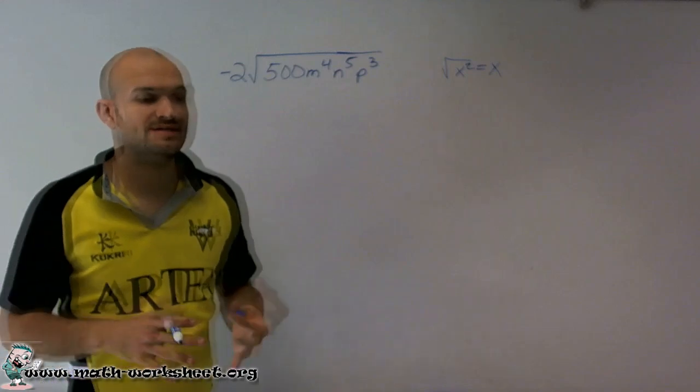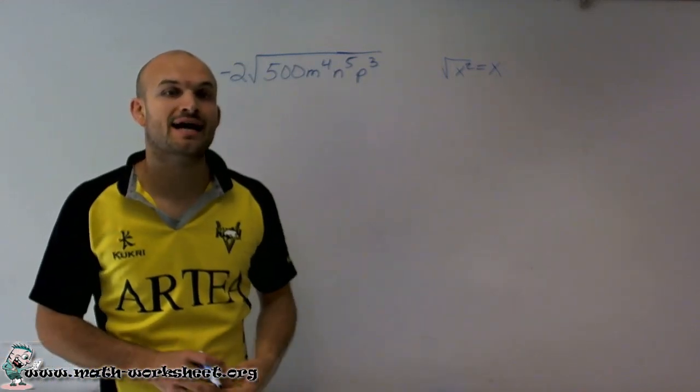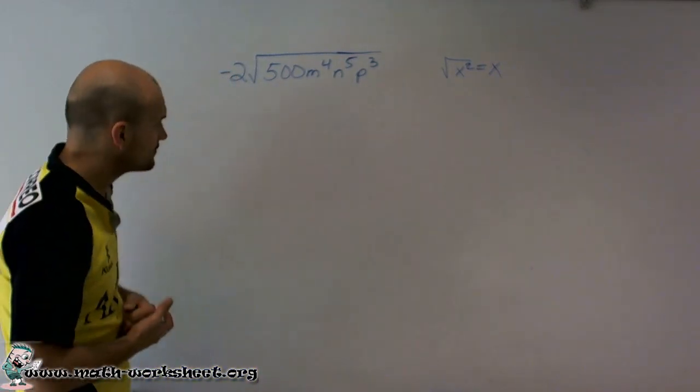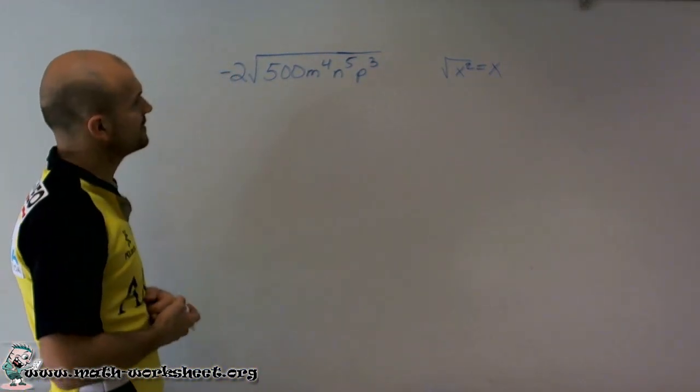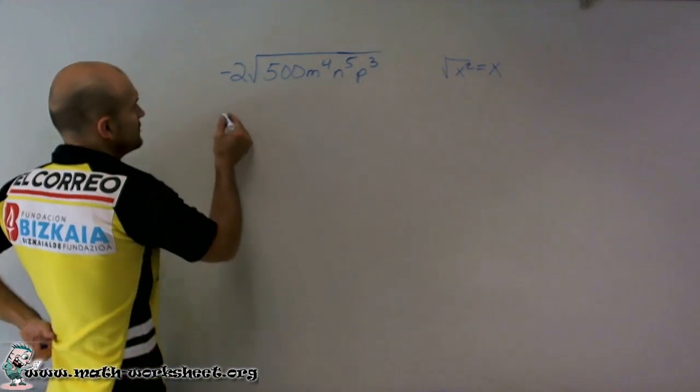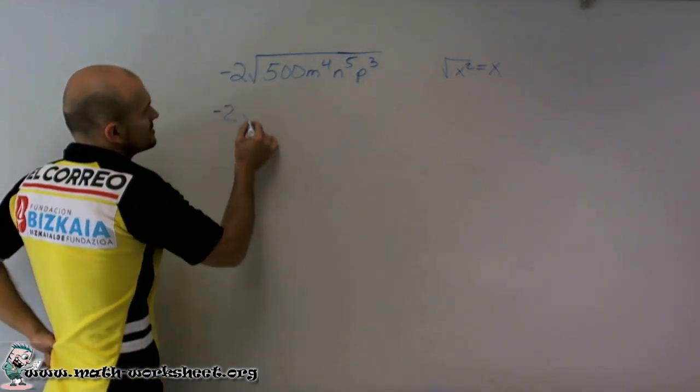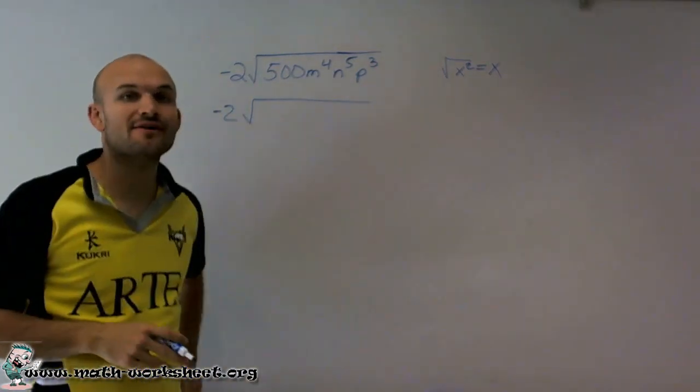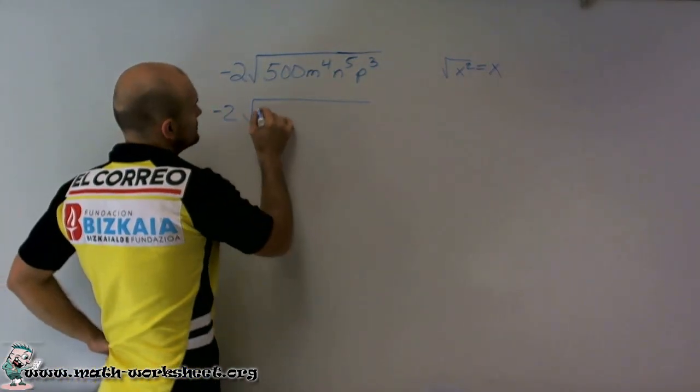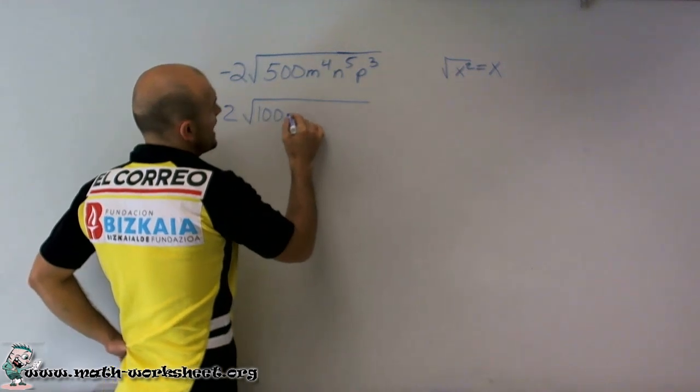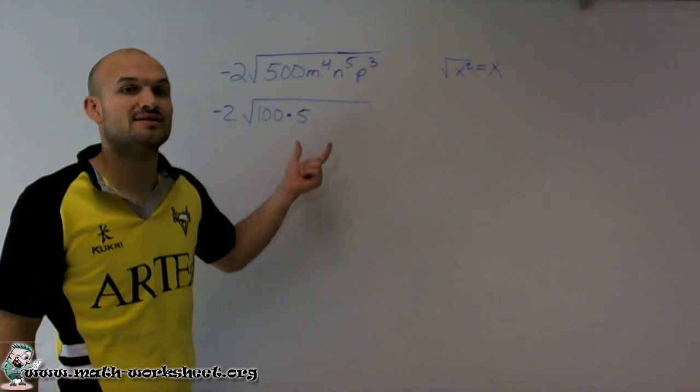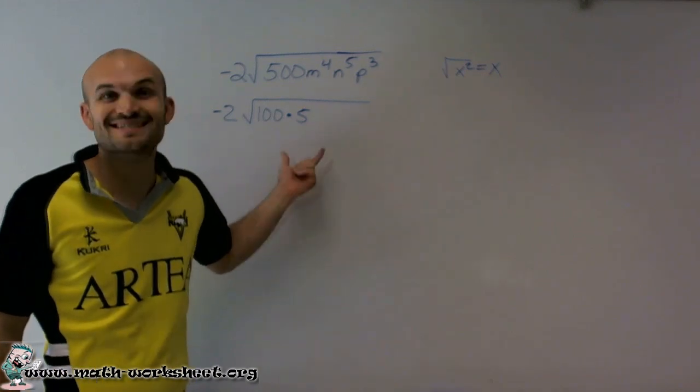However, what I'm going to want to do is see if I can rewrite 500 as a product of a square number and another number. So what I have here is let's take a look at it. So if I do negative 2 times, I can rewrite 500 as 100 times 5. And I know 100 is a square number because that's 10 times 10.